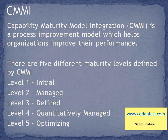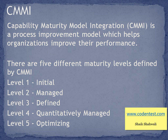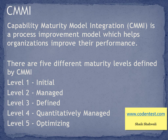The CMMI standards are set mainly for software firms, and there are five different maturity levels defined by CMMI. Level one is called Initial — in this, the process followed by organizations is not documented, it is chaotic, uncontrolled, and the environment is unstable.